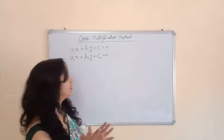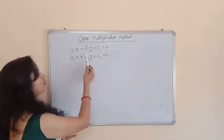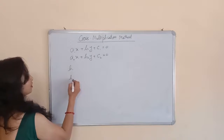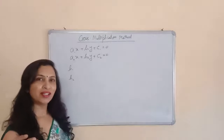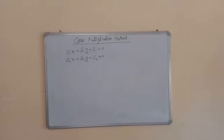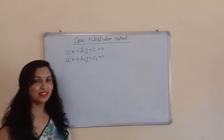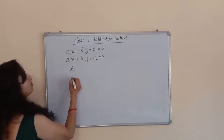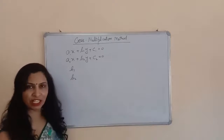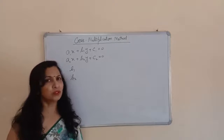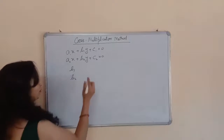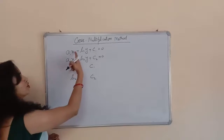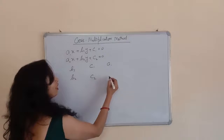What will you do with this method? First of all, you will write the coefficient of y. This is an easy way to do questions by this method. You will write the coefficient of y first — that is b1 and b2. These b1 and b2 will generally be numerical values. Then write the constants c1 and c2, and then write the coefficient of x, that is a1 and a2.